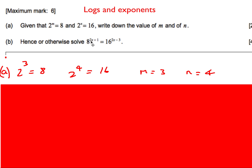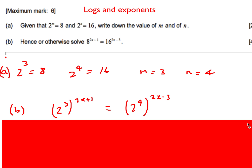It then says 'hence or otherwise solve 8^(2x+1) = 16^(2x−3).' We'll use the 'hence' method. Since 2³ = 8, replace 8 with 2³, and since 2⁴ = 16, replace 16 with 2⁴. The equation becomes an equation entirely in base 2.